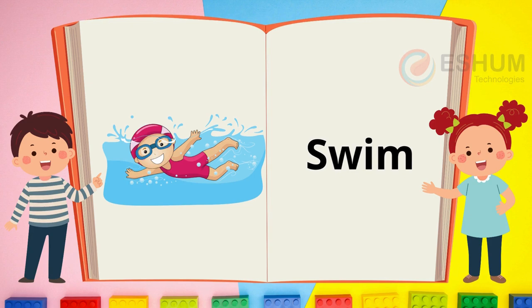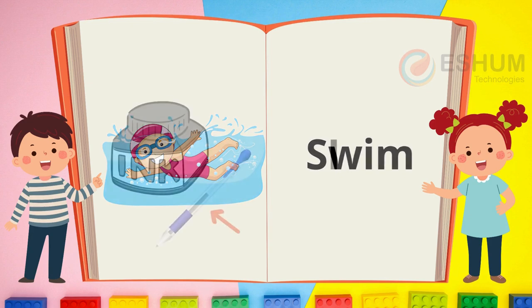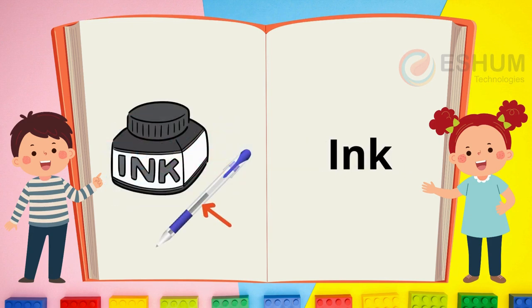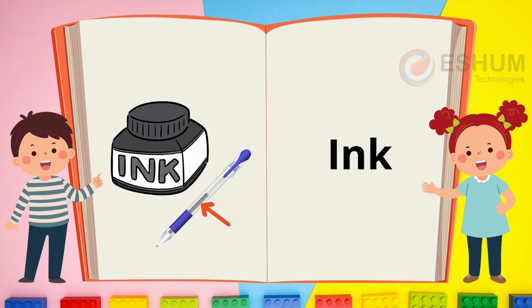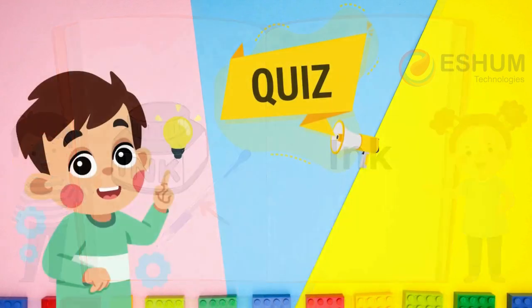Can you swim? Where do you go to swim? Ink. Ink is the stuff you see in a pen — it can be many different colors. In the picture you can see ink. What color is the ink?